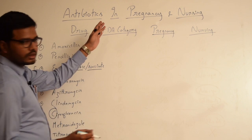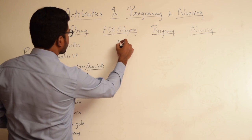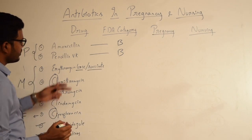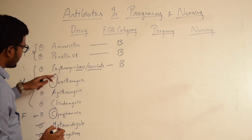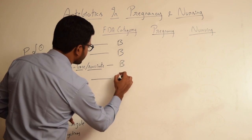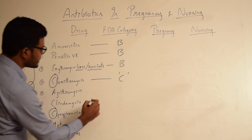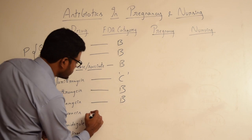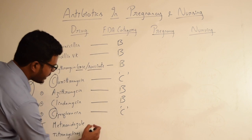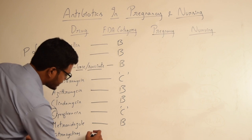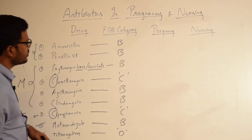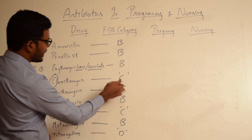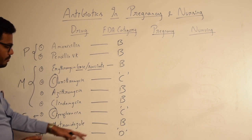Regarding FDA categories: amoxicillin belongs to category B, penicillin VK also belongs to category B, erythromycin belongs to category B, clarithromycin belongs to category C, azithromycin and clindamycin belong to category B, ciprofloxacin belongs to category C, metronidazole belongs to category B, and tetracyclines belong to category D. So most drugs are category B, with clarithromycin and ciprofloxacin in category C, and tetracycline in category D.